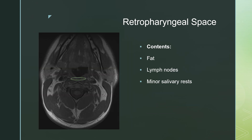In the retropharyngeal space, you also have a thin strip of fat between the pharyngeal mucosa and the prevertebral musculature. In there you have fat, lymph nodes that can live in there, and minor salivary rests as well. You notice a common theme in the head and neck — you can have lymph nodes and minor salivary rests basically anywhere.